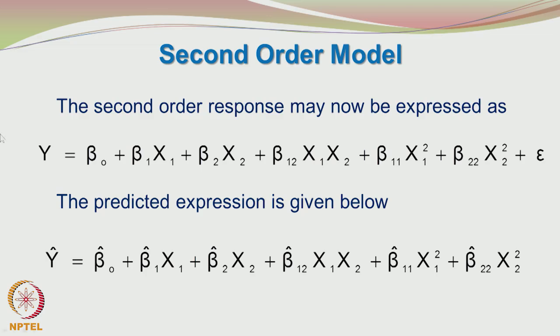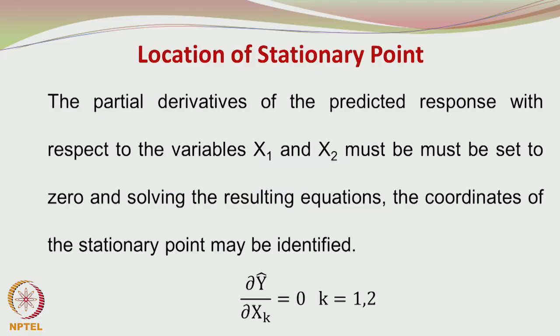When you have two factors, this is the form of the equation, the true response involving the random error component and this is the model which is being proposed and you have to estimate the beta naught hat and then the remaining parameters beta hat 1, beta hat 2, beta hat 1,2 corresponding to the interaction, beta hat 1,1 and beta hat 2,2, the last 2 corresponding to the quadratic terms. Again, we can use linear algebraic techniques in order to identify the optimum conditions.